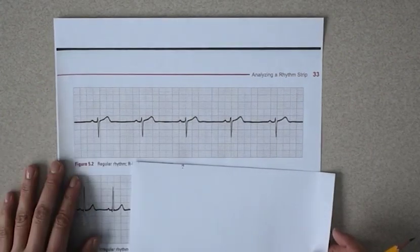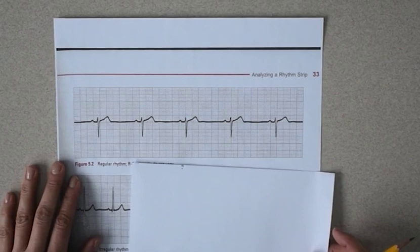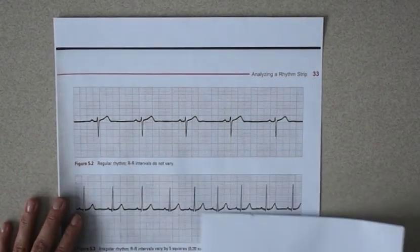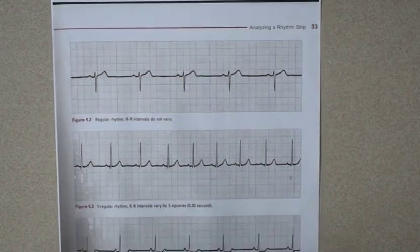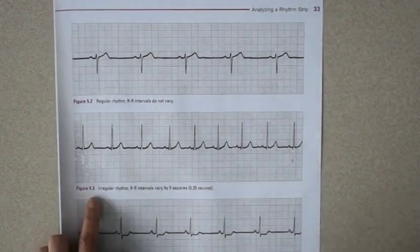The expectation is that you would use the 1500 rule to calculate heart rate because this is a regular rhythm. Okay, we'll do one more from the textbook 5.3.